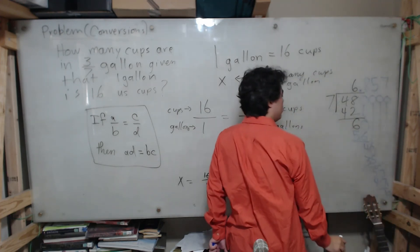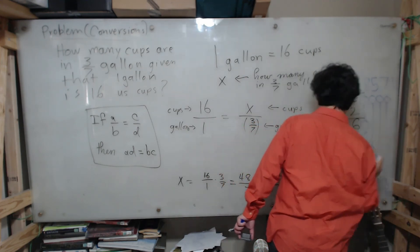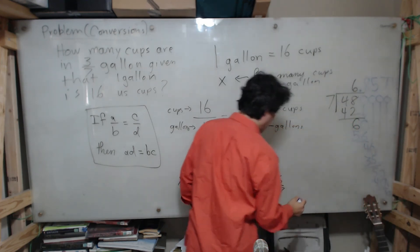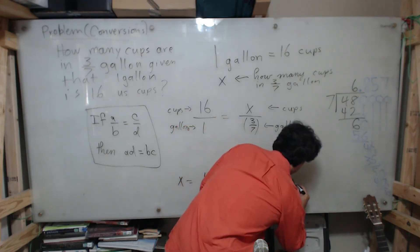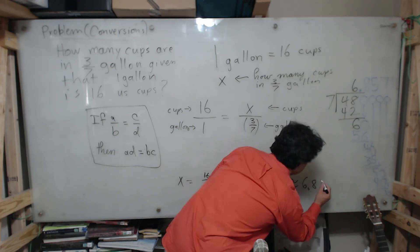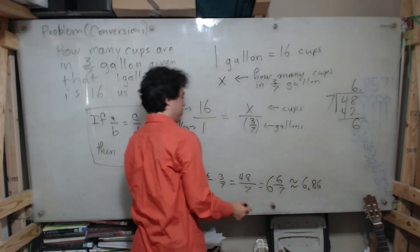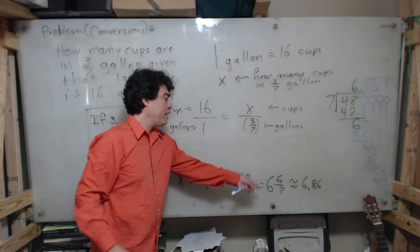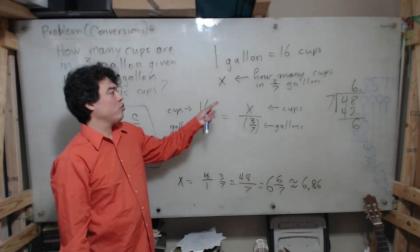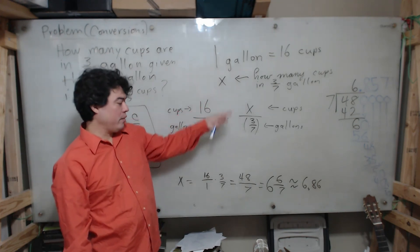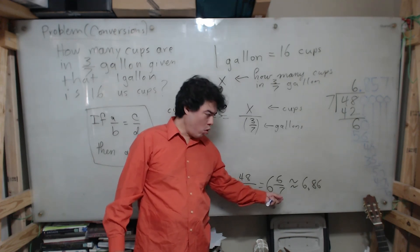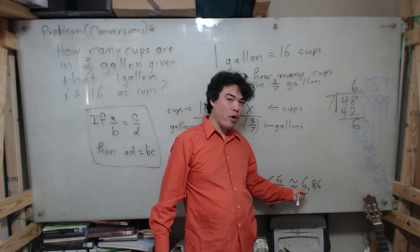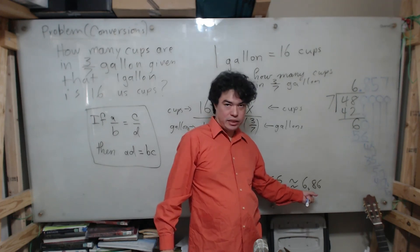So I can either say that - now I can answer the question: How many cups are in three-sevenths of a gallon? Six and six-sevenths of a cup, precisely. Or I could say that it is approximately 6.86 cups.